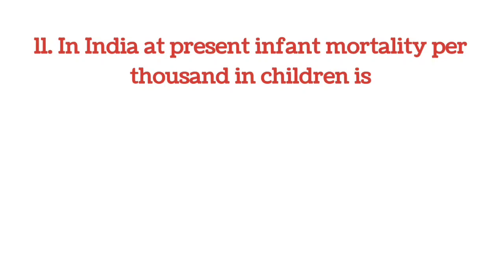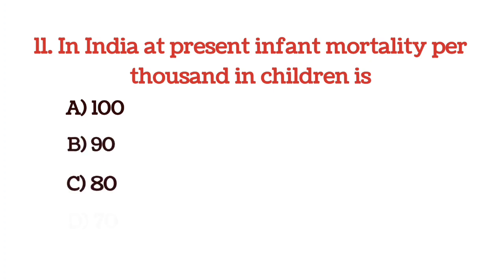Next question: in India, the present infant mortality rate per thousand in children is — options are 100, 90, 80, and 70. The answer is option C, 80.